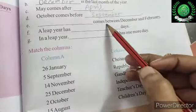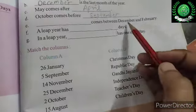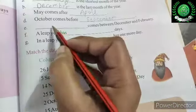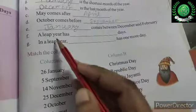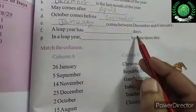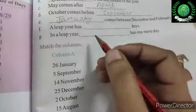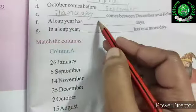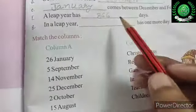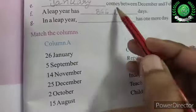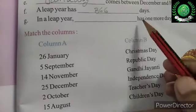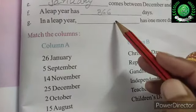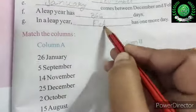What comes between December and February? That is January. A-N-U-A-R-Y. A leap year has 366 days, which is one more than the usual 365 days. In a leap year, February has 29 days.